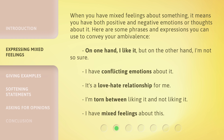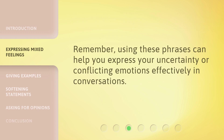On one hand, I like it, but on the other hand, I'm not so sure. I have conflicting emotions about it. It's a love-hate relationship for me. I'm torn between liking it and not liking it. I have mixed feelings about this. Remember, using these phrases can help you express your uncertainty or conflicting emotions effectively in conversations.